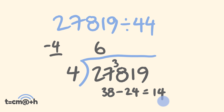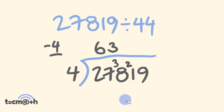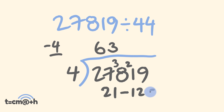14 divided by four is equal to three with two left over. Now what do we have? We'll have 21, and we have three times minus four, which is 12. So this is equal to 21 take away 12, which is equal to nine. Nine divided by four is equal to two with one left over.